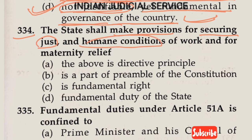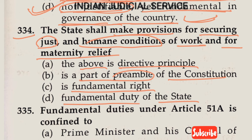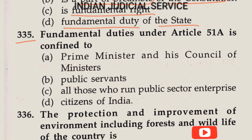Question Number 334: 'The state shall make provision for securing just and humane conditions of work and for maternity relief' — Option A: this is a Directive Principle; Option B: part of the Preamble; Option C: a Fundamental Right; Option D: fundamental duty of the state. The answer is Option A — it is a Directive Principle, provided in Article 42 of the constitution.